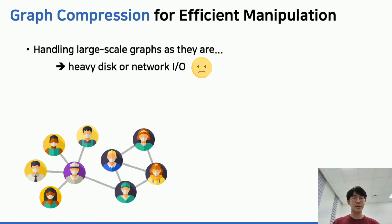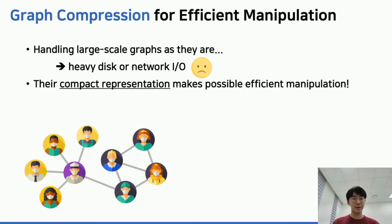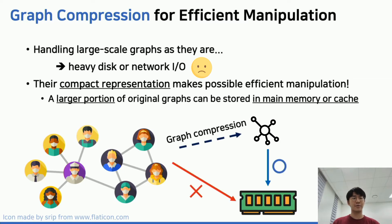However, dealing with these large-scale graphs as they are without any further manipulation requires heavy disk or network I/O depending on where the input graph is located. To tackle this issue, one promising approach is to represent them as compactly as possible. The main advantage is that through compression, a larger portion of original graphs can be stored in main memory or cache, leading to faster graph algorithms.